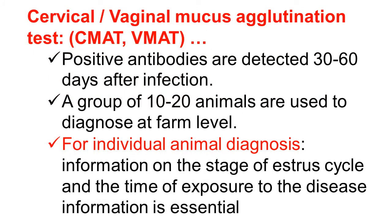In the CMAT or VMAT test, positive antibodies are detected 30 to 60 days after infection — that much time is needed for antibody formation. Herd-level diagnosis is possible by testing a group of 10 to 20 animals at the farm level. For individual animal diagnosis, information on the stage of the estrus cycle and the time of exposure is essential, so this test is not very accurate for individual animals. For herd diagnosis, the clinician can test about 10% of the animals.